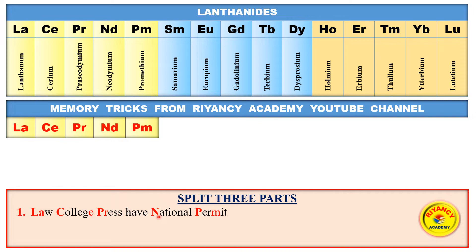National permit law college printing press — national permit postulate. Lanthanum, Cerium, Praseodymium, Neodymium, Promethium — a sentence: national permit postulate. Lanthanum, Praseodymium, Neodymium, Promethium — law college press have national permit. First five elements, memory trick with symbols.